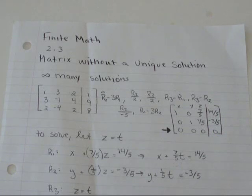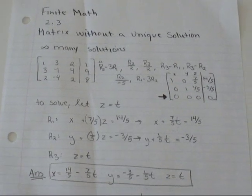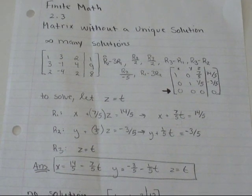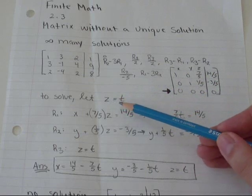So the problem with that is 0x plus 0y plus 0z. x, y, and z, they could be anything because 0 times any number is always 0. So you don't know really what they are. Anything could work. So to write your solution, you're going to let z equal t.